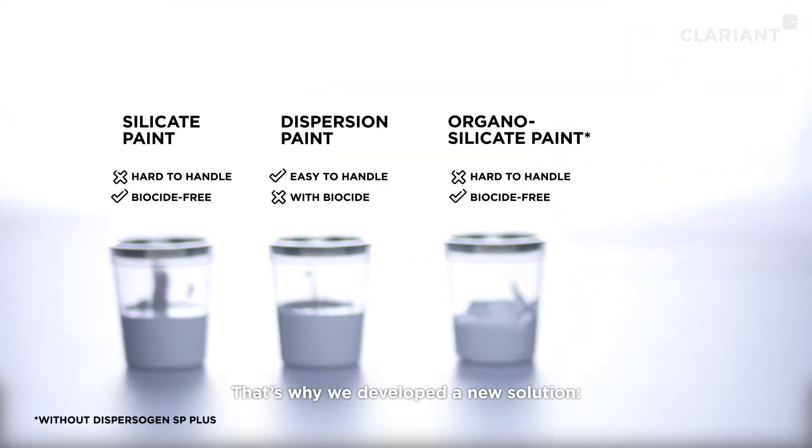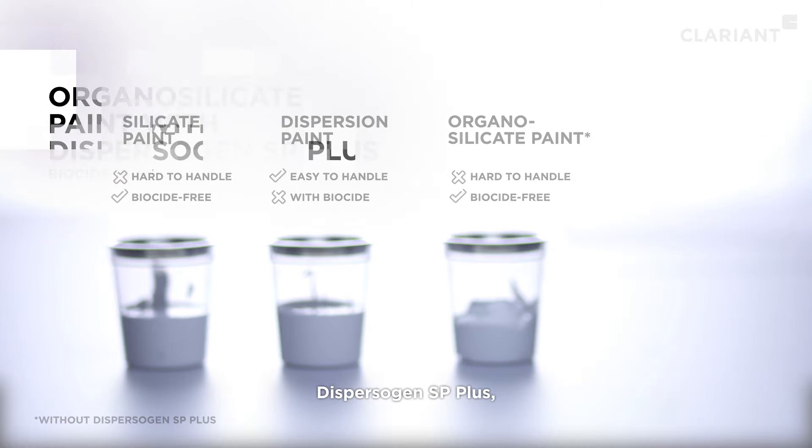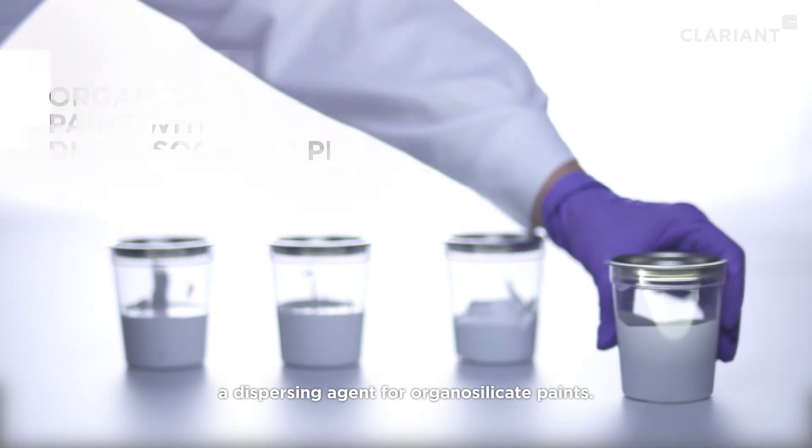That's why we developed a new solution, Dispersogen SP+, a dispersing agent for organosilicate paints.